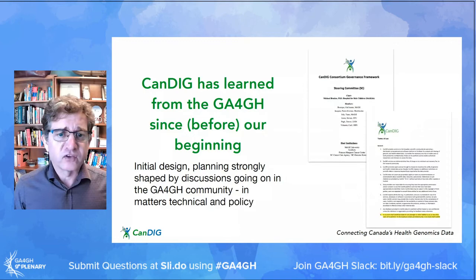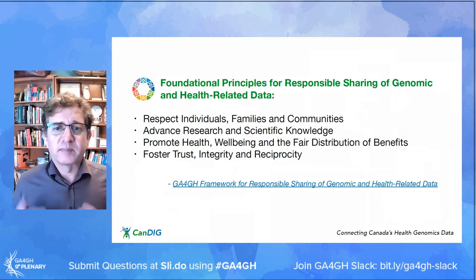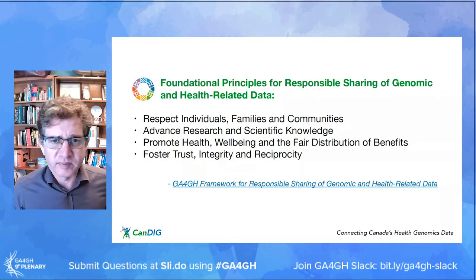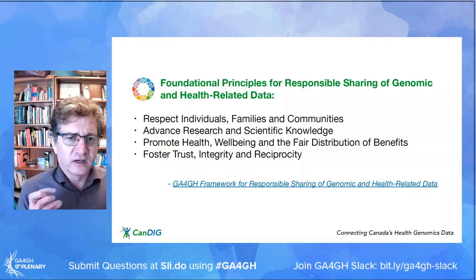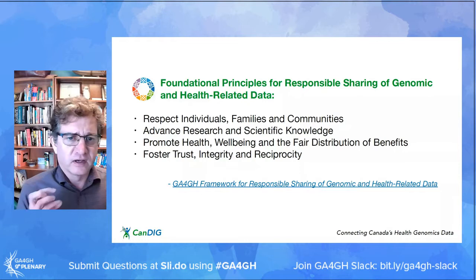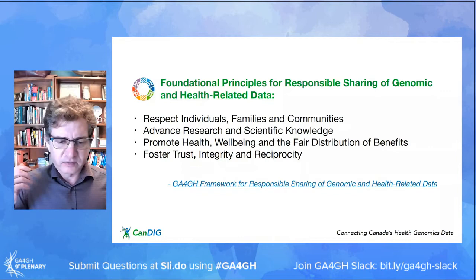One of the ways this has played out has been around early discussions about what eventually became the foundational principles for responsible sharing of genomic and health-related data from GA4GH: respecting individuals, families, and communities; advancing research and scientific knowledge; promoting health, well-being, and the fair distribution of benefits; and fostering trust, integrity, and reciprocity. These are fundamental principles, and there's some tension between them.